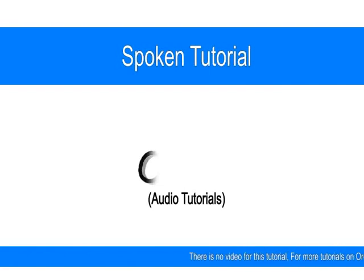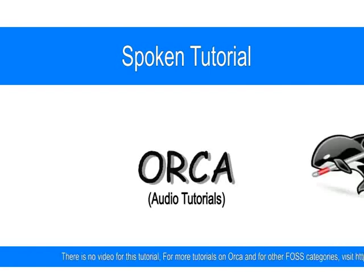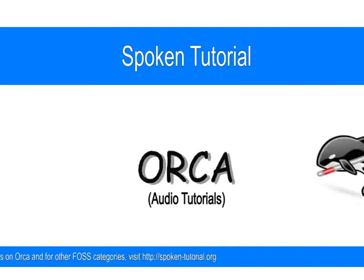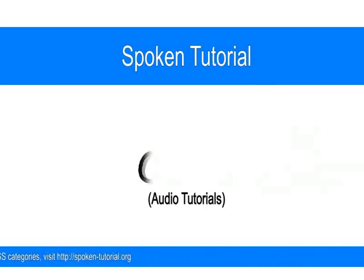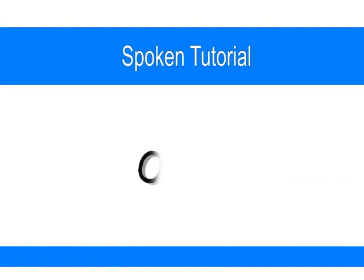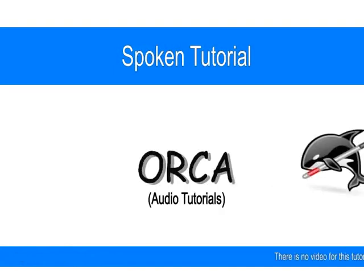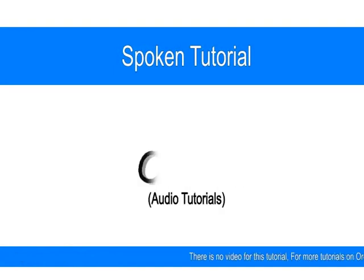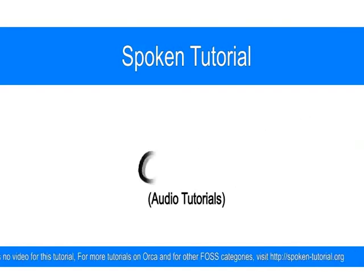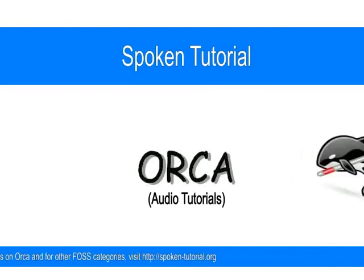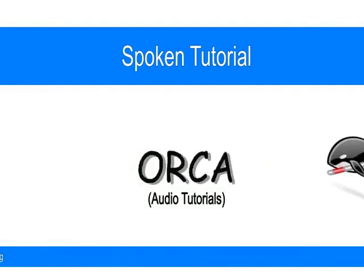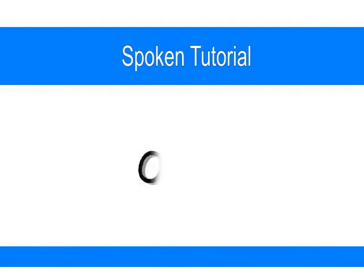If you have gone through the first time with Orca tutorial, you will remember that the text editor is in the Accessories submenu. Press down arrow to navigate to Accessories menu, then press the right arrow to enter the submenu. Keep pressing the down arrow until we navigate to the gEdit text editor — past Calculator, CD/DVD Creator, Character Map, Disk Usage Analyzer, gDeskLux — and we arrive at the gEdit text editor.